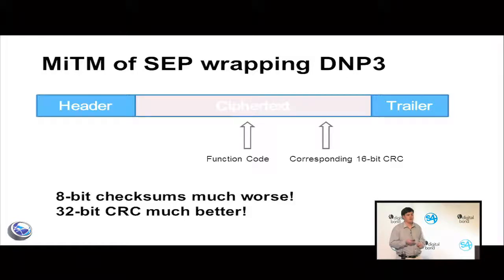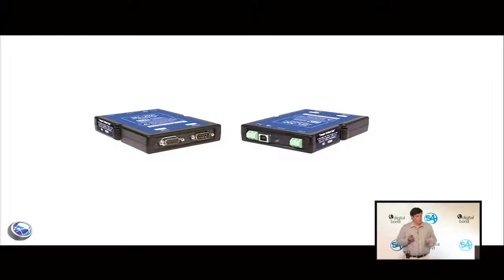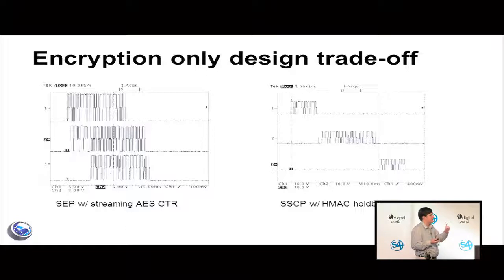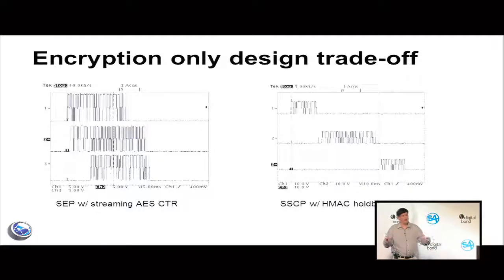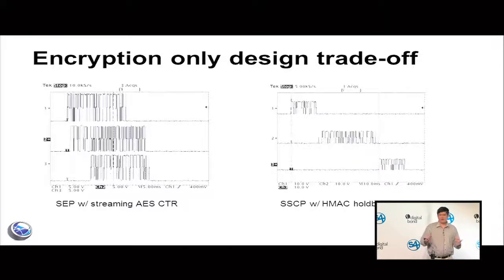The numbers aren't as good as we're normally used to for cryptography — we usually say you'll never guess until the heat death of the universe. Why did they do this? Simply because of legacy systems we can't retrofit, so we want link encryptors, and we need to stream data with minimum latency because we've already saturated that radio tower. These oscilloscope traces show the minimal latency of the link encryptor versus SSCP, which has HMAC holdback — you have to hold back the whole packet until you've validated the message digest at the end, which pretty much doubles latency.